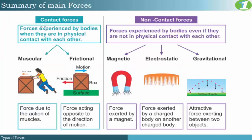For a quick summary of the main forces, we have muscular or applied force and frictional force, where friction acts in the opposite direction of motion. The actual position of friction is between the surface and the object. In our non-contact forces we have a summary of magnetic, electrostatic, and gravitational force. Gravitational force is the attractive force exerted between two objects, dependent on the masses of those objects, and it is responsible for an important relationship between mass and weight.